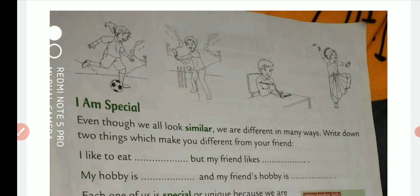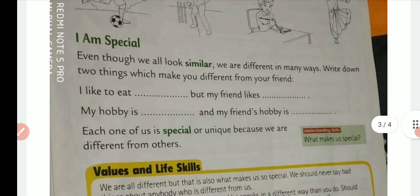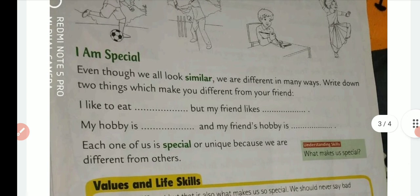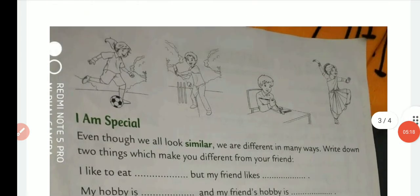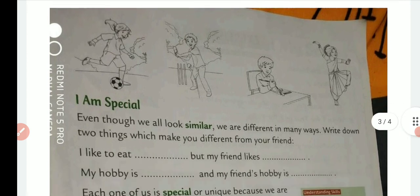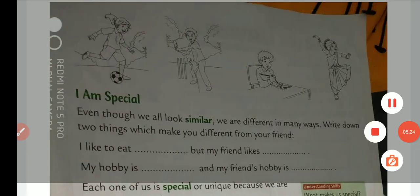You have to write down five sentences about what you like to do — I like to paint, I like to play anything like Ludo, you want to play video games, anything which you like. The last paragraph, 'I Am Special,' we are going to do tomorrow. Color these drawings — you can see this girl and boys doing some special things. You have to color them and then show it to me. Bye-bye.